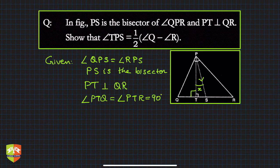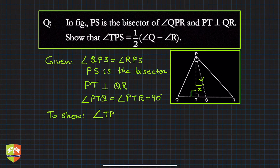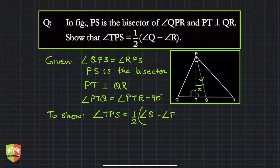This is given, okay. And we have to prove—what is to be shown? ∠TPS is half (∠Q - ∠R). So how do we approach such problems?